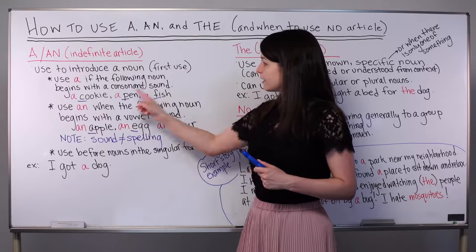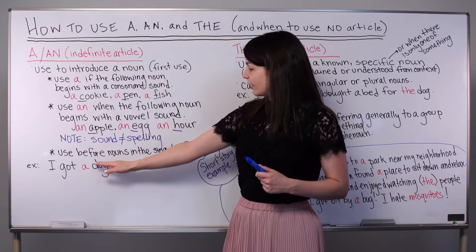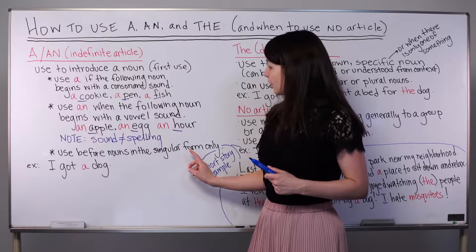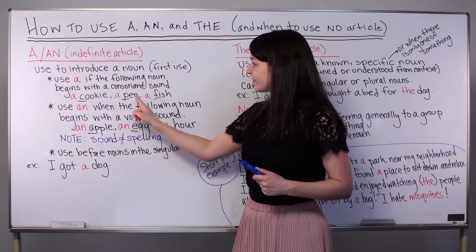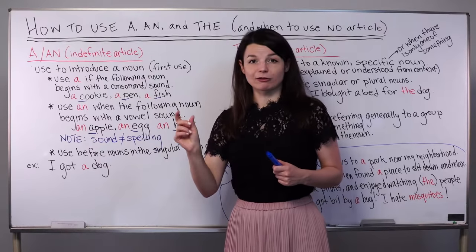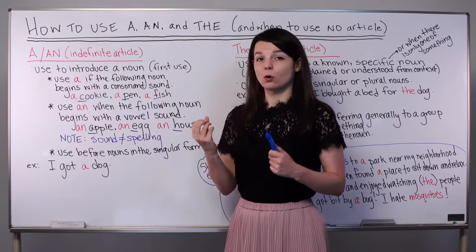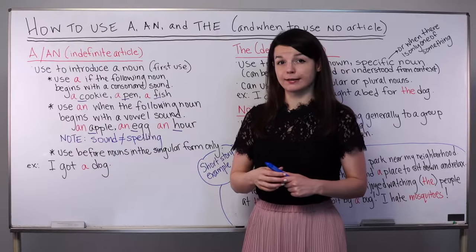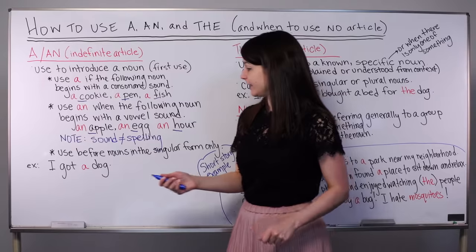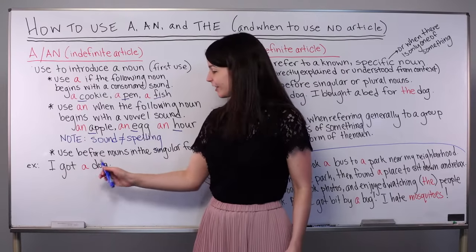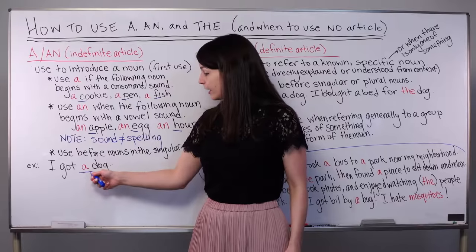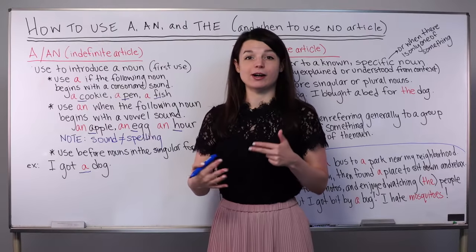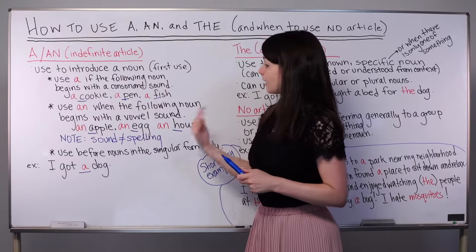As you can see, we use the indefinite article before nouns in the singular form only. You don't see an S at the end of these words — we can only use the singular form, meaning one of something. Only the singular form when you're using the indefinite article. A very simple example sentence using the indefinite article is: I got a dog. Dog is in the singular — I got one dog. This is a new dog; I'm introducing this dog to my conversation, so I use a to do that.